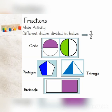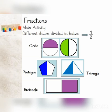Hope you are clear about half, which is written as one over two as a fraction. Let's observe different shapes and how they are divided into halves. Starting from a circle — a circle can be divided horizontally and vertically into halves. Coming towards a pentagon — pentagon is divided vertically into halves. The same with a triangle. A rectangle can be divided vertically as well as horizontally into halves. Isn't it interesting?